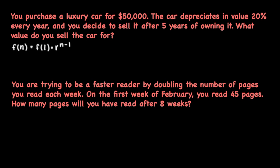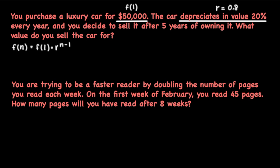Going back to the problem, we know that we purchased the car for $50,000 — that's what the car is initially worth, so that's going to be our f(1). The car depreciates in value 20%, which is our common ratio r. Depreciating by 20% means that every year our car is going to be 80% of what it was worth the previous year, so our r is 0.8.